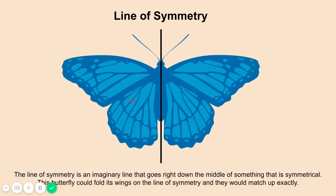Now, to help you figure out if something is symmetrical, what you do is you add a line of symmetry. The line of symmetry is an imaginary line that goes right down the middle of something that is symmetrical. It is helpful to use because this line of symmetry can be used to pretend to fold something in half, and if it matches up exactly, you know it's symmetrical. So if this butterfly could fold its wings on the line of symmetry, they would match up exactly.